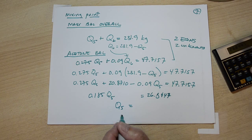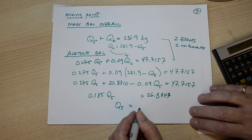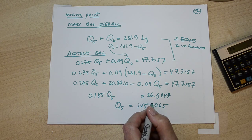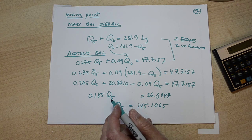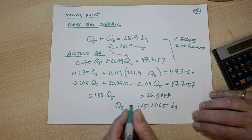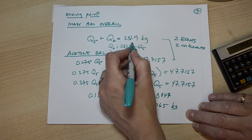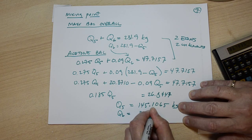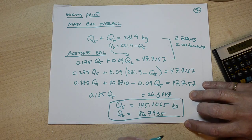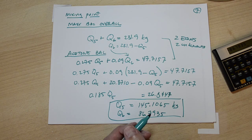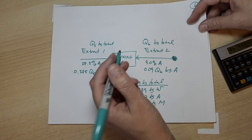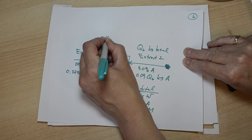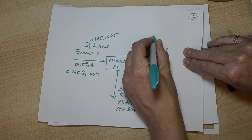Q5 equals 145.1065 kilograms. Therefore Q6 = 231.9 − 145.1065 = 86.7935 kilograms. That allows me to fill in this flow diagram: Q5 is 145.1065 and Q6 is 86.7935.